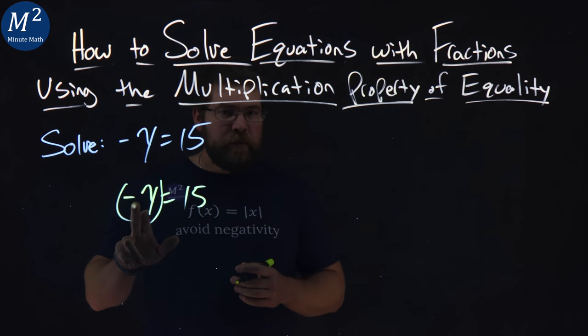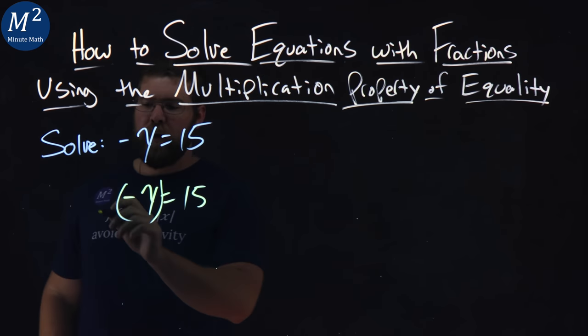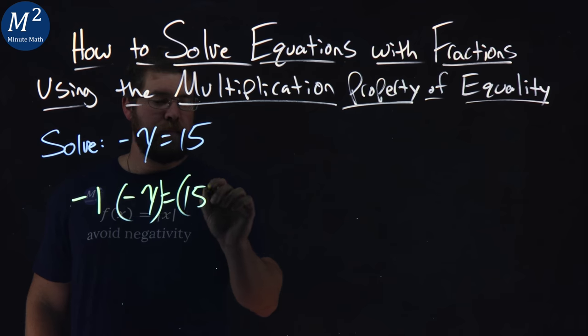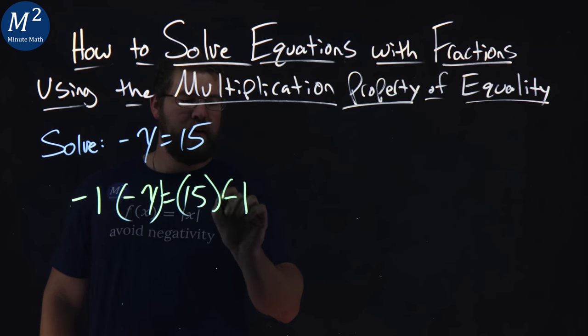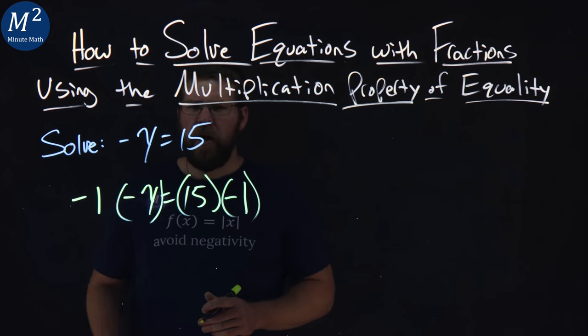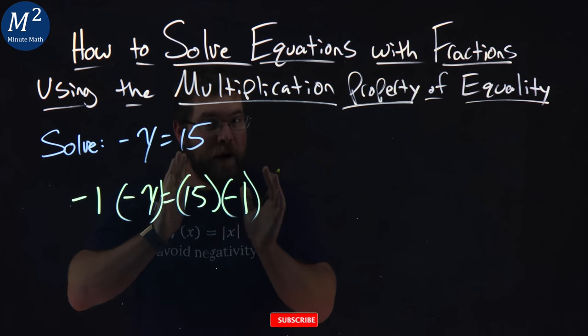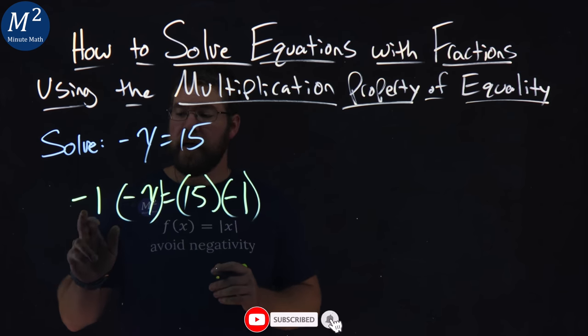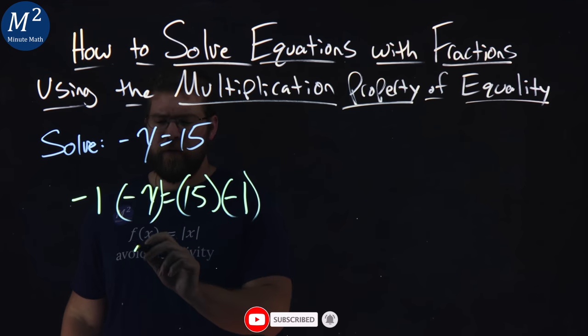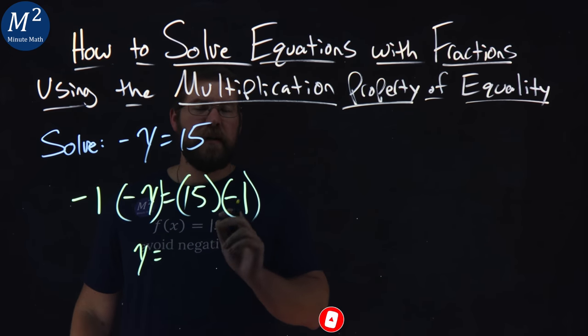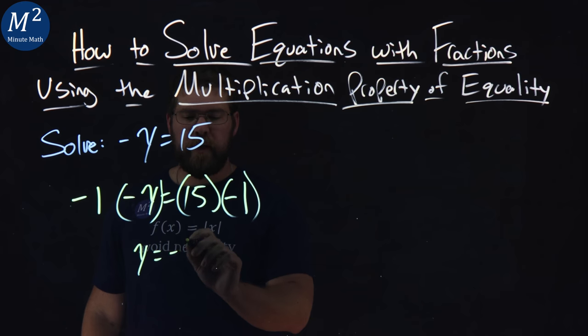So to get rid of that negative in front of the y, I can multiply both sides by a negative 1. There we go. What this does is makes the left-hand side to be a positive y. Remember, y by itself completely. Negative 1 times negative y is a positive y. 15 times a negative 1 is a negative 15.